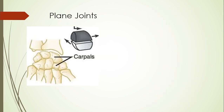The last one is a plane joint. With a plane joint, it's essentially a sliding motion. Although they don't do any other movements, these bones will just slide on top of each other. Examples of this are found in your carpals and your tarsals in your foot. That's really all a plane joint is — a sliding motion.